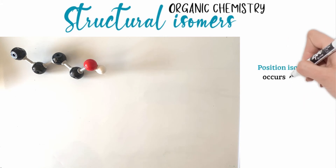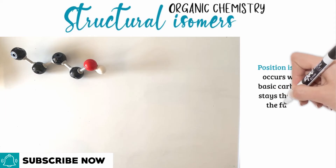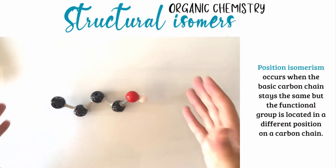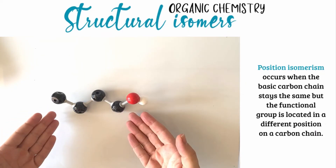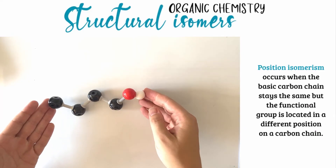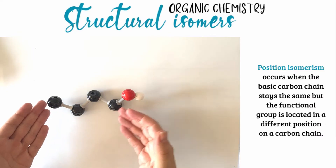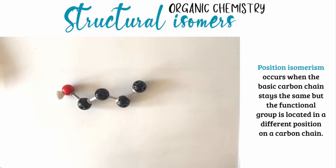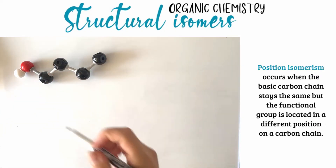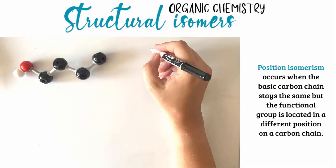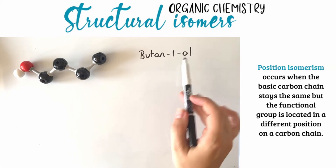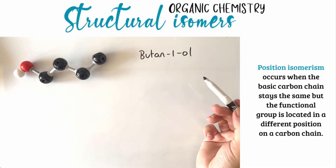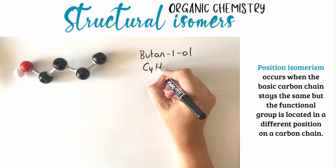The next type of isomer is called a position isomer, or position isomerism. This occurs when the basic carbon chain stays the same but the functional group is located in a different position. Consider this molecule: we have four carbon atoms in a straight chain and the functional group — in this case the alcohol group OH — is located on the first carbon atom. This chain has four carbons, so it is butan-1-ol. The formula for this molecule is C4H9OH.